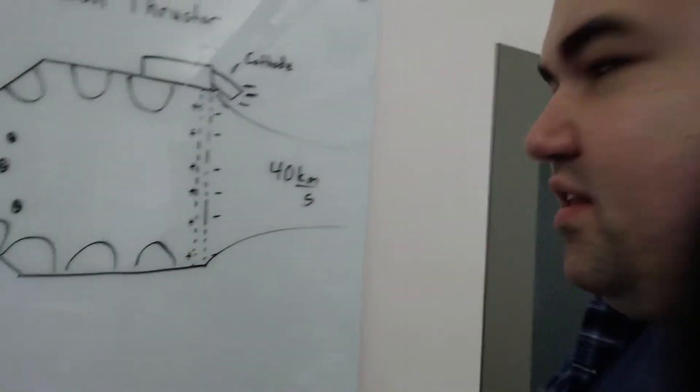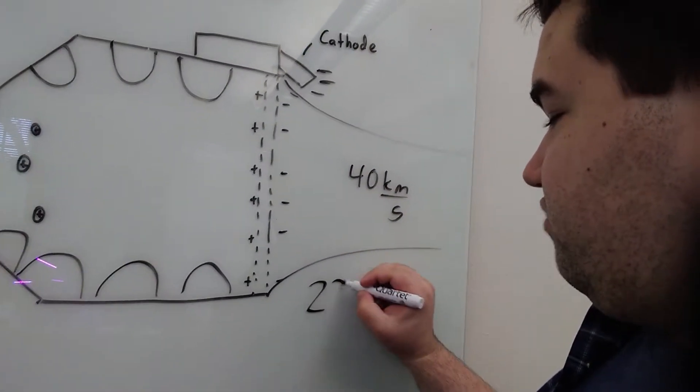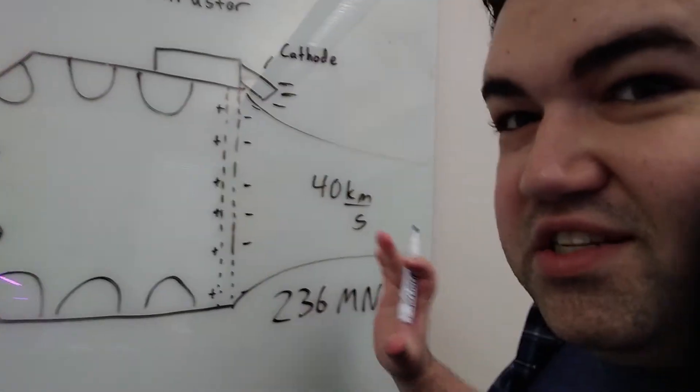And actually, this plasma thruster produces a grand total of 236 mega newtons of thrust. Isn't that crazy?